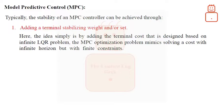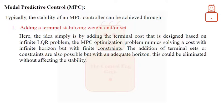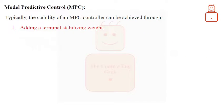Here, simply the idea is by adding the terminal cost that is designed based on infinite LQR problem, the MPC optimization problem mimics solving a cost with infinite horizon but with finite constraints. The addition of terminal sets or constraints are also possible but with an adequate horizon, this could be eliminated without affecting the stability. Let us stick to adding only a stabilizing weight.